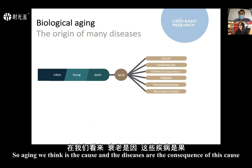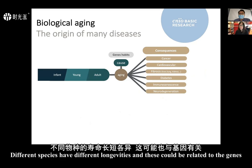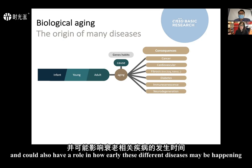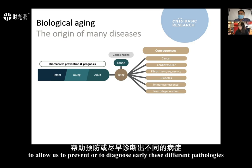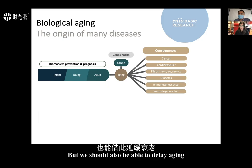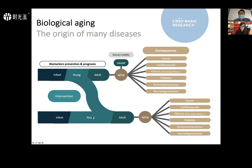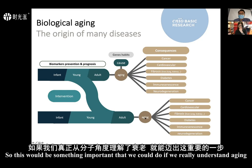Aging we think is the cause and the diseases are the consequence of this molecular process of aging. Aging can be influenced by genes — different species have different longevity, which could be related to genes — but also within species such as homo sapiens, life habits can influence the speed of aging. If we know these molecular causes of aging, we will be able to have biomarkers to prevent or diagnose early these different pathologies, delay aging, and increase the health span of individuals, delaying many different diseases at once.